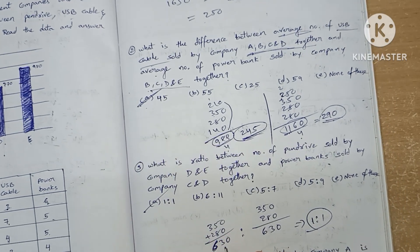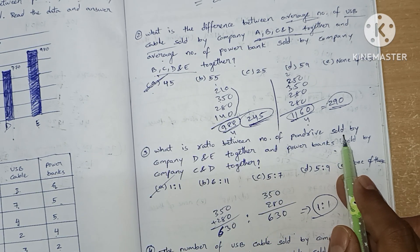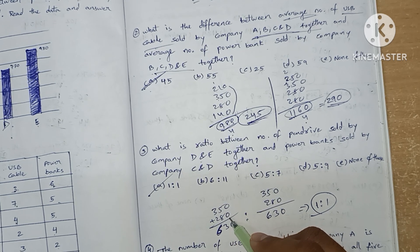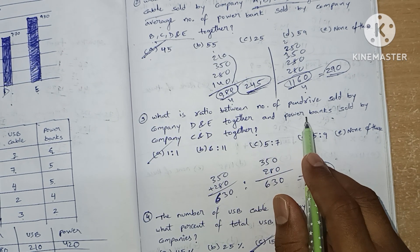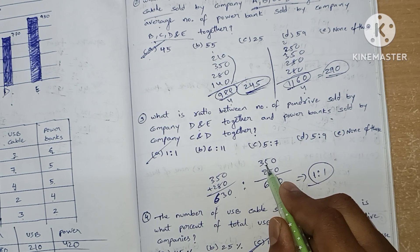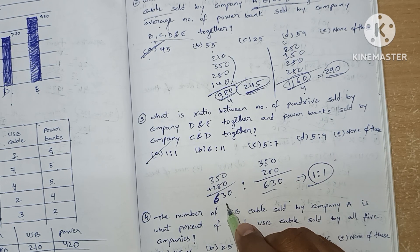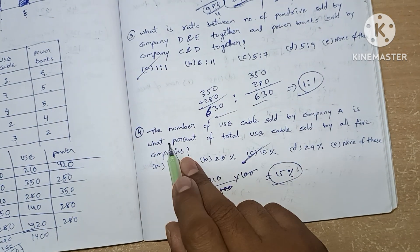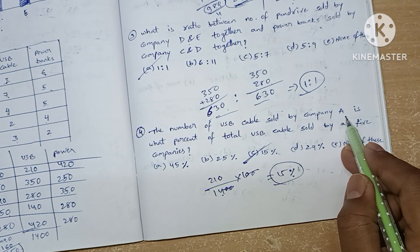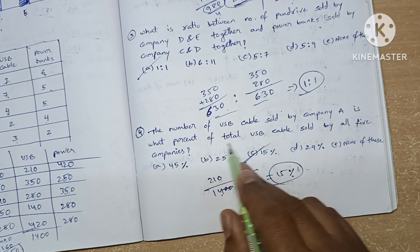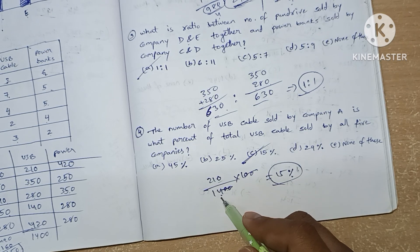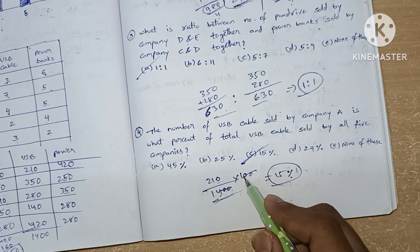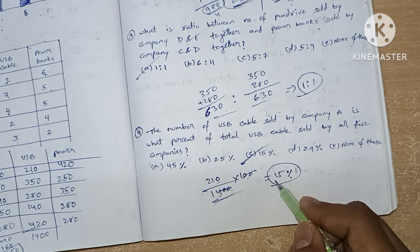Question three: the ratio between pen drives sold by companies D and E is 350 and 280, giving 630. Power banks of C and D are 350 and 280, also giving 630. The ratio is 1:1. Question four: the number of USB cables sold by A is 210. The total USB cables sold is 1400. Multiplying by 100 to find the percentage gives us 15 as our answer.